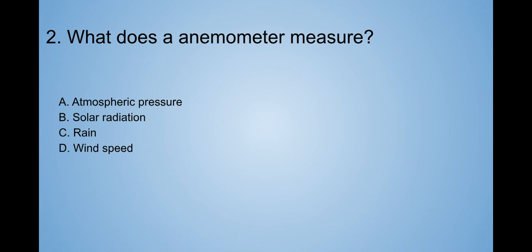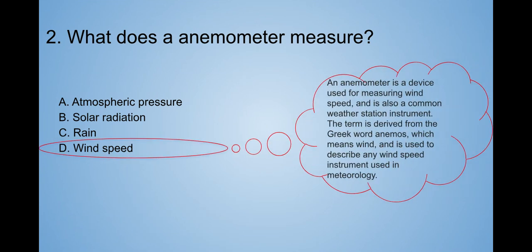Okay, good. Answer, come on out! Oh, it's D. Wind speed. An anemometer is a device used for measuring wind speed and is also a common weather station instrument. The term is derived from the Greek word anemos, which means wind and is used to describe any wind speed instrument used in meteorology.